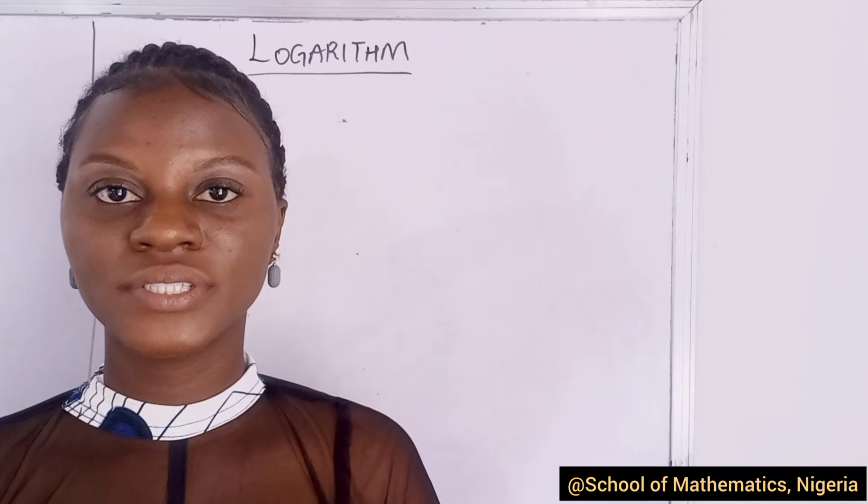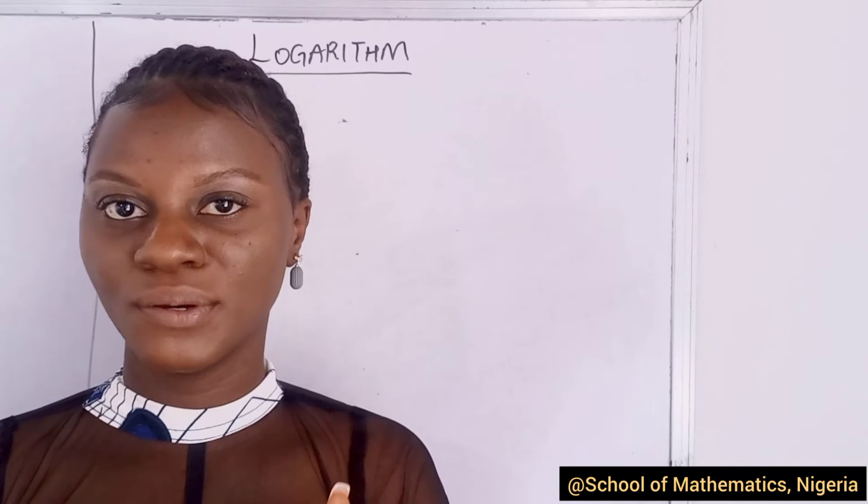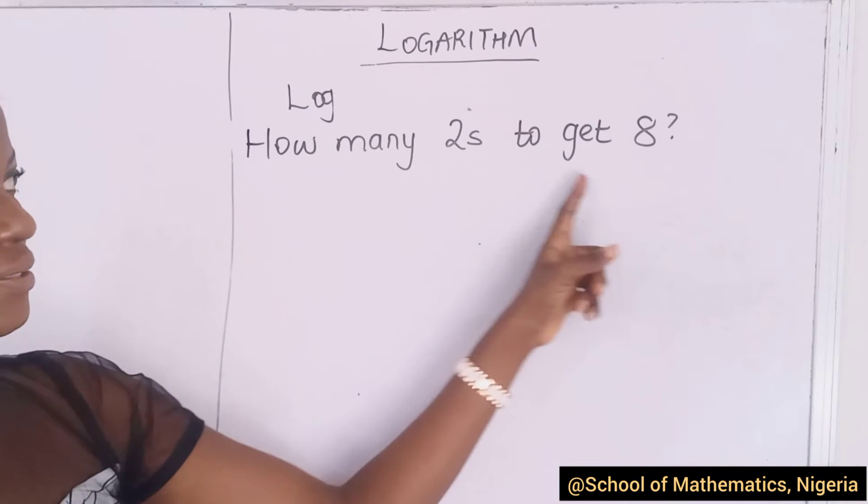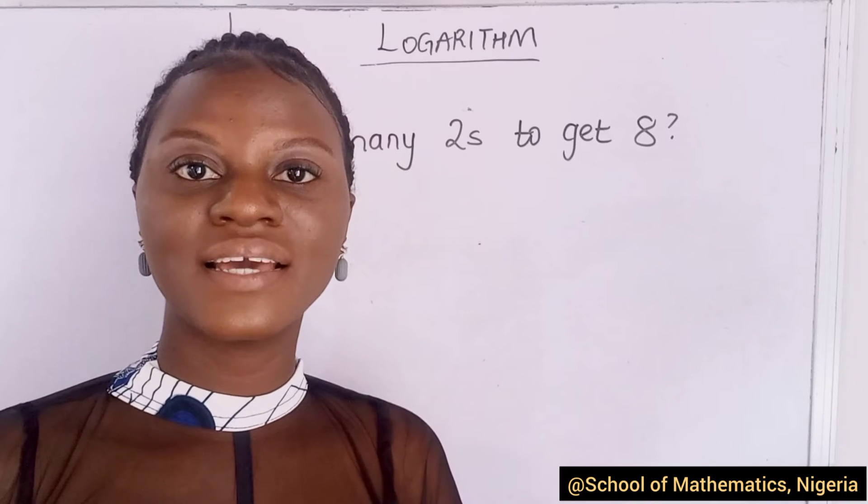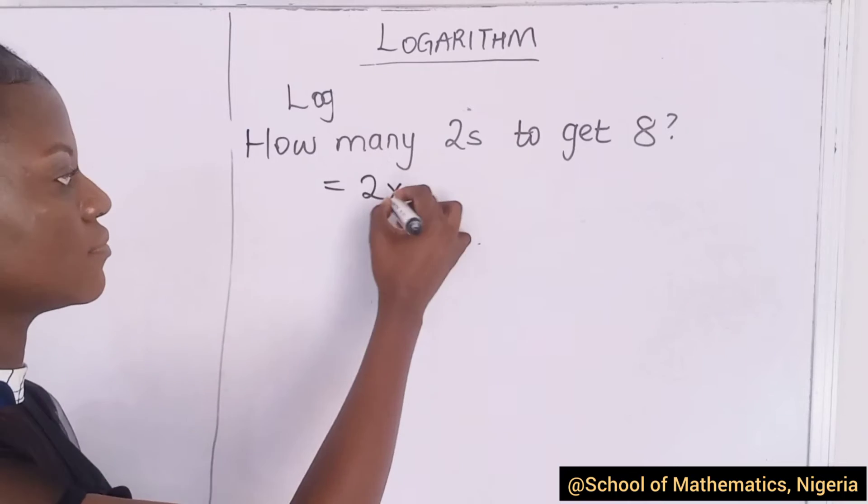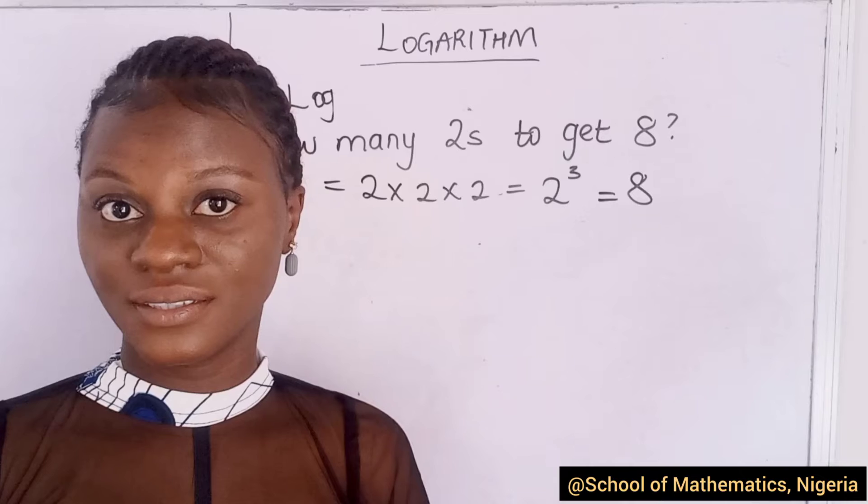In its simplest form, logarithm is the number of times you have to multiply a number to get a particular number. What do I mean? How many twos to get eight? How many times do we have to multiply two to get eight?